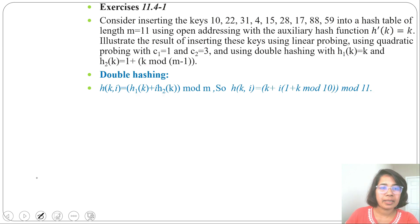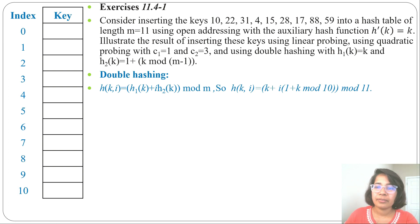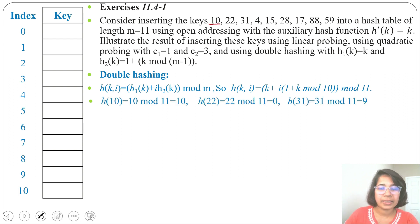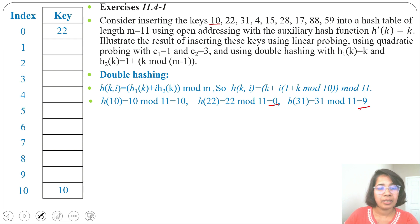Let's create the hash table. m = 11, so the index will be from 0 to 10 (0 to m-1). First key is 10: 10 mod 11 = 10, insert 10 at slot 10. Next, 22 mod 11 = 0, insert 22 at slot 0. Next, 31 mod 11 = 9, insert 31 at slot 9.